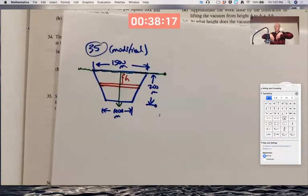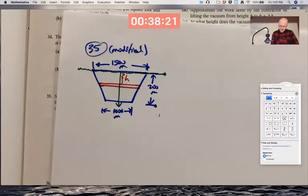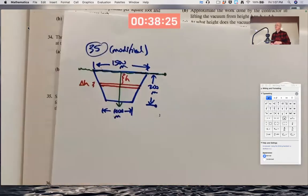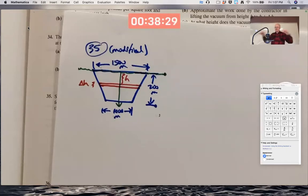As you go downwards, the h gets bigger. With delta h, why am I thinking about thin slices? Because it's at an approximate constant depth. A thin slice that's horizontal like this, all the points are at an approximate constant depth.